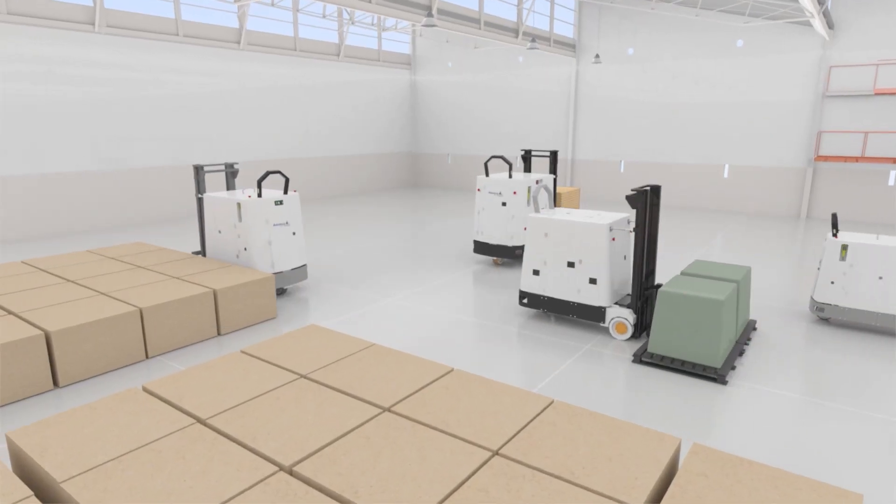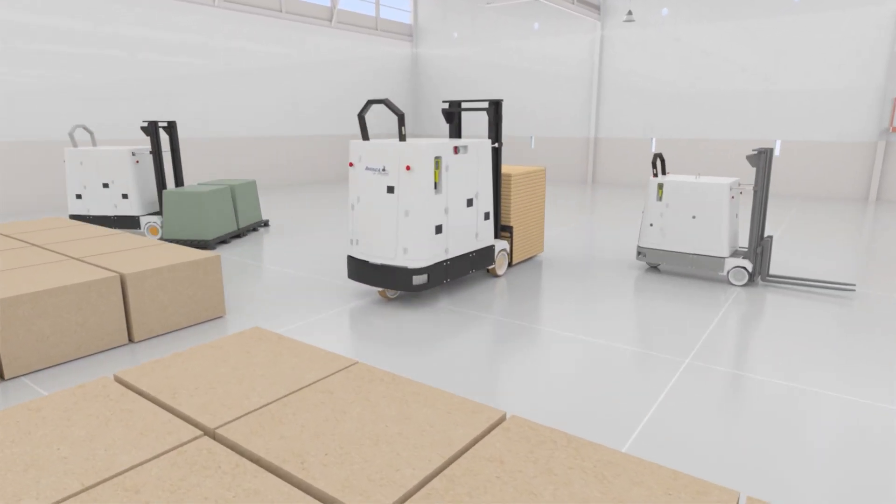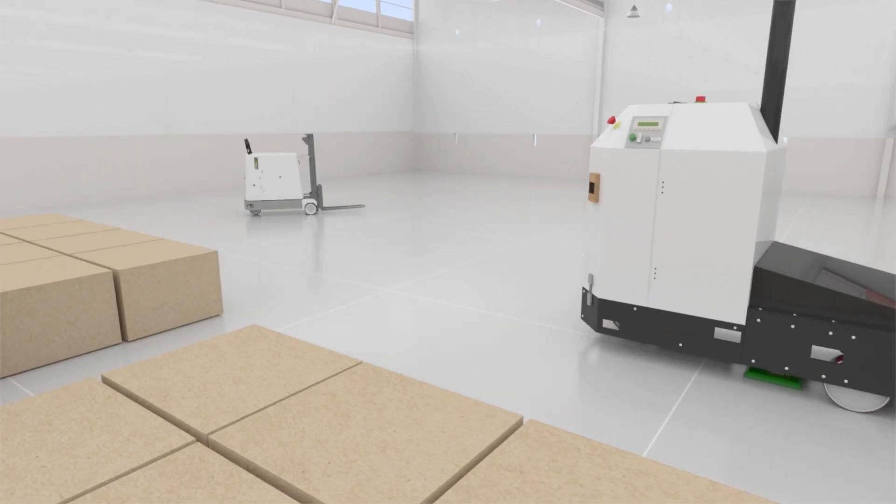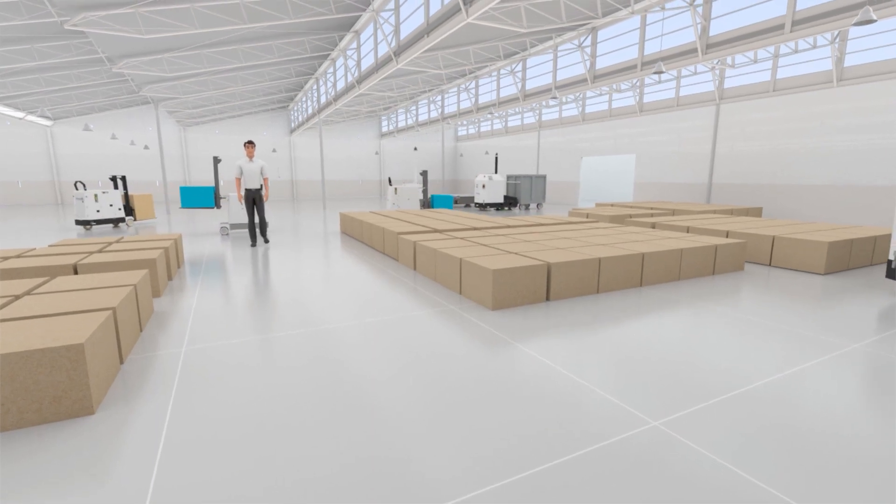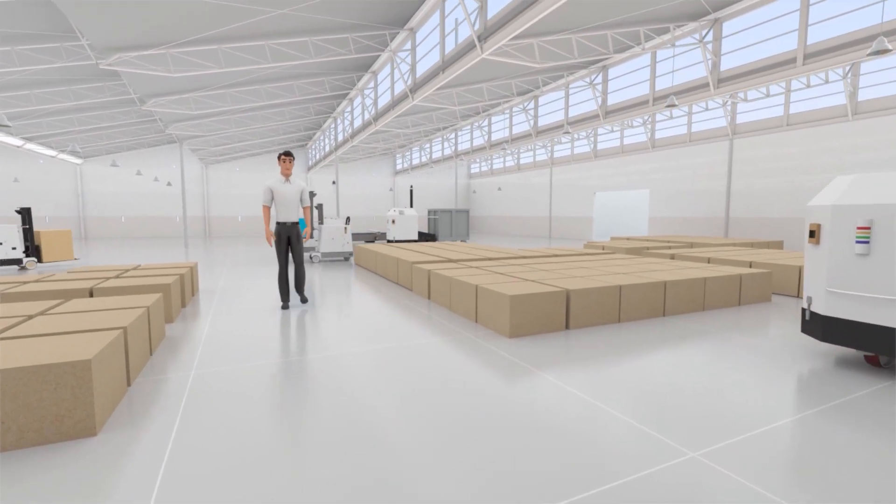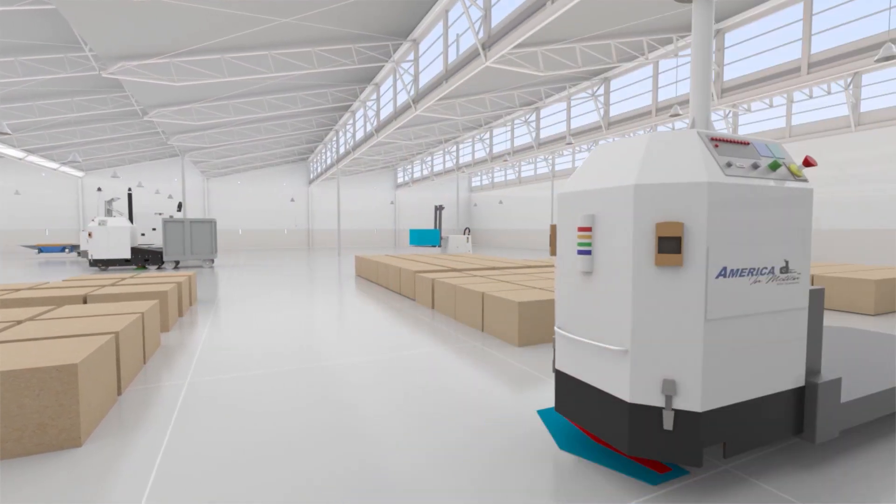At America in Motion, our system, otherwise known as the E-Manager, runs seamlessly in the background, allowing robots to collaboratively work together to move the product. This allows for an optimized workflow which increases productivity, improves safety, enhances efficiency, and reduces costs.